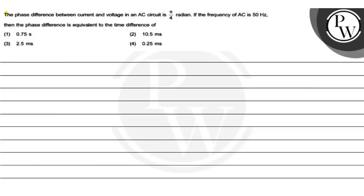Let's get a question. The phase difference between current and voltage in an AC circuit is π/4 radian. If the frequency of AC is 50 Hz, then the phase difference is equivalent to the time difference of? The options are: first, 0.75 second; second, 10.5 ms; third, 2.5 ms; and fourth, 0.25 ms.